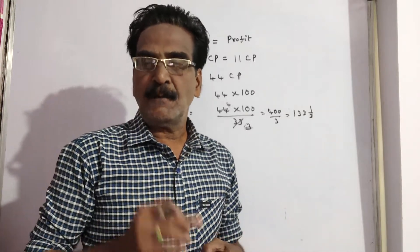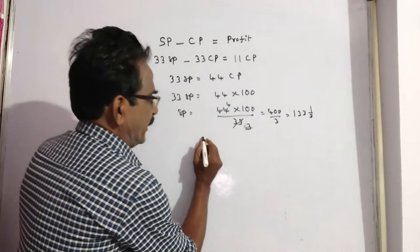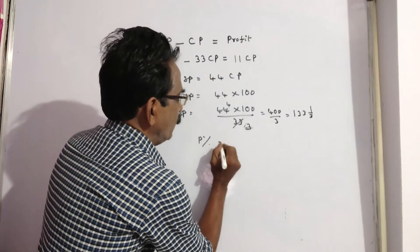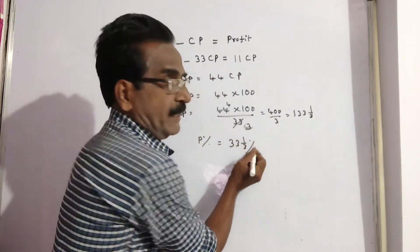So, profit percent is equal to 33, 1 by 3 percent friends. Profit percent is equal to 33, 1 by 3 percent.